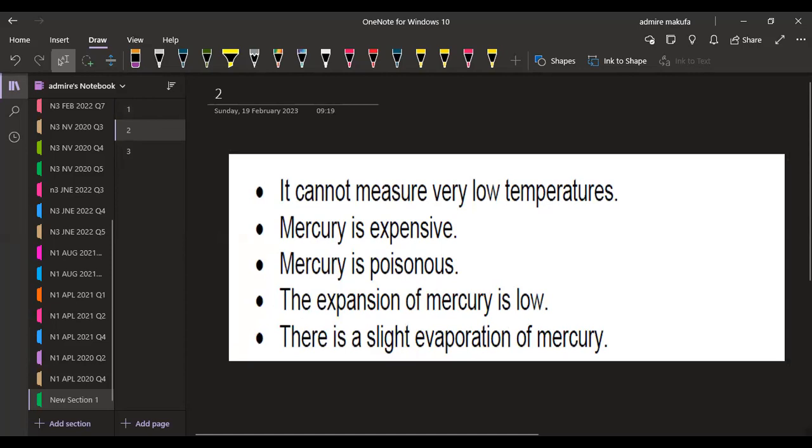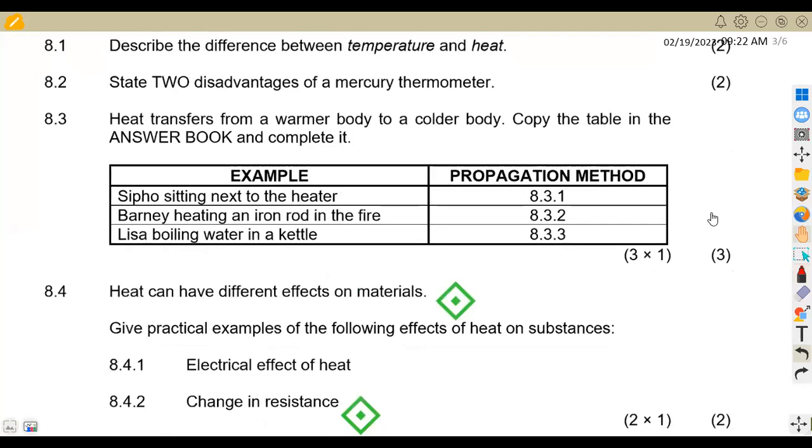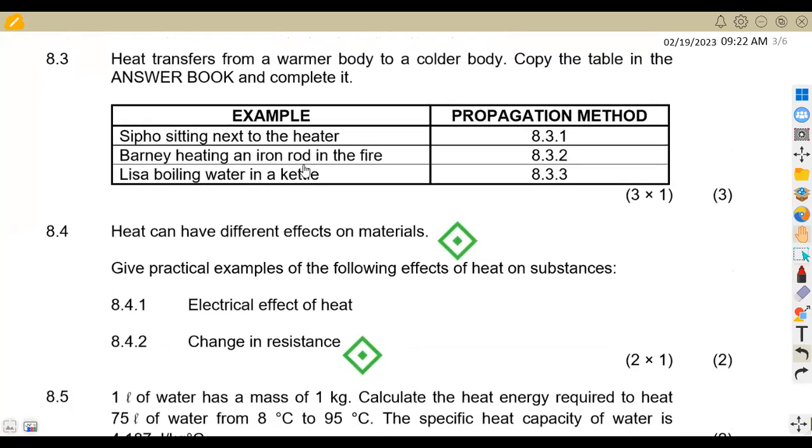Let's check the other part of the question that we are given. In this case, we are given that heat transfers from a warmer body to a cooler body. Copy the table in the answer book and complete it. So you're supposed to copy this table and you complete everything. You redraw this table and complete the answers on 8.31, 8.32, 8.33.